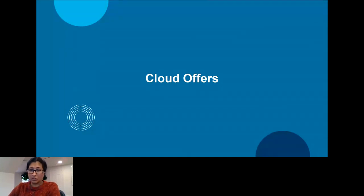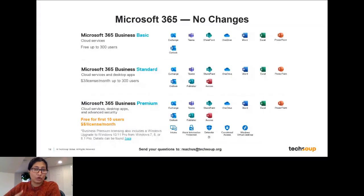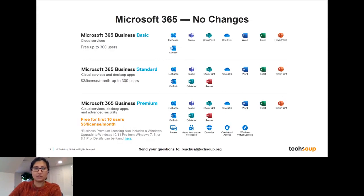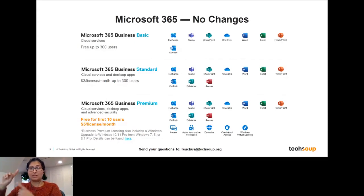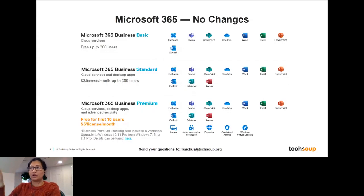Now let's quickly walk through the cloud offers available to you — there are no changes to these. The first is the Microsoft 365 Business Basic license. This is cloud services only — web applications — and allows you, with internet access, to get Teams, SharePoint, OneDrive, Word, PowerPoint, Excel, Outlook, and everything you need. That's completely free for up to 300 users. There's also the Microsoft 365 Business Standard license, also available for up to 300 users, which includes everything in Business Basic plus downloadable desktop applications of all those apps, including Publisher and Access.